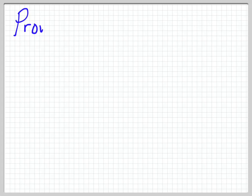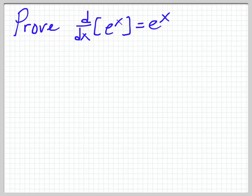So we're going to prove that d over dx of e to the x is equal to e to the x. In the last video, I did it using logarithmic differentiation. In this video, I'm going to use the definition of derivative, or limit proof.